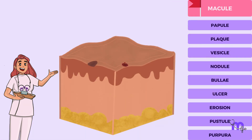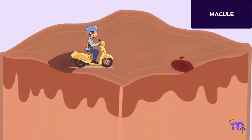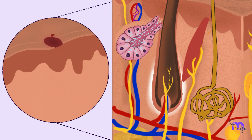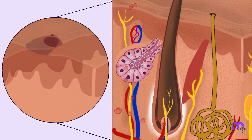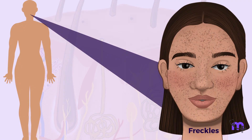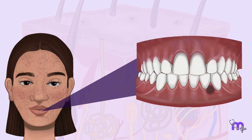This is a macule, which appears as flat spots on the skin or oral mucosa, different in color from the surrounding areas. These can be red, caused by increased blood flow or inflammation, or pigmented due to the presence of melanin or hemosiderin. Freckles are a common example of a macule on the skin. In the mouth, a melanotic macule is a small dark spot on the gums.